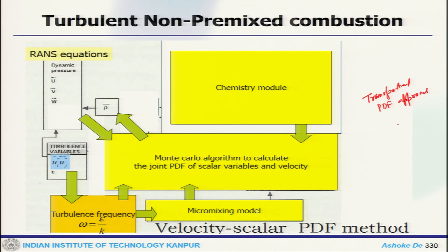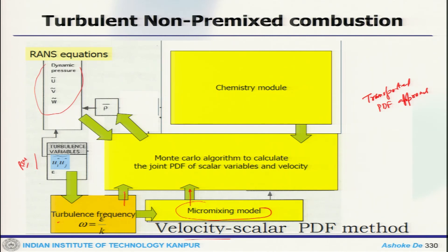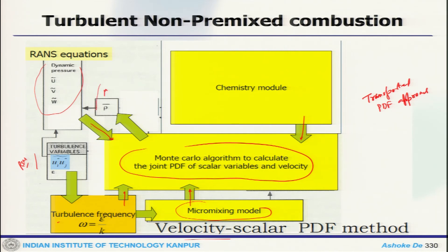The velocity-scalar composition PDF approach requires a joint PDF and all related quantities. The idea is similar: solve the mean flow field, but here you solve RSM-type equations with individual Reynolds stress terms and dissipation. Using that, you get turbulent frequency for the micromixing model. Mean flow field information and kinetics come in, then Lagrangian solutions are obtained via Monte Carlo. Finally, density and viscosity are fed back to the mean flow field equation.